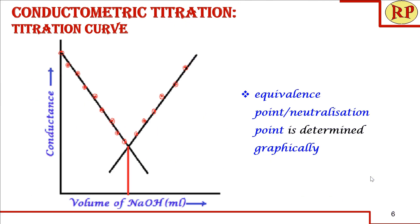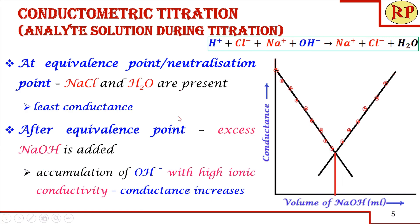At the equivalence point or neutralization point, all 20 ml of HCl has reacted with 20 ml of NaOH. Only NaCl remains in solution, and both Na⁺ and Cl⁻ ions have low ionic conductivity. This gives the least conductance value of all points in the titration — the minimum conductance occurs at the equivalence point.